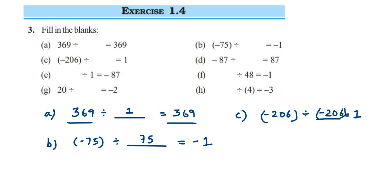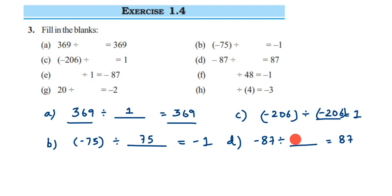Problem d: -87 divided by what gives 87. We have minus on the left but plus on the right, which means we must divide by a negative number. Dividing by 1 gives the same number, but dividing by -1 flips the sign. So the answer is -1, because -87 divided by -1 gives positive 87.